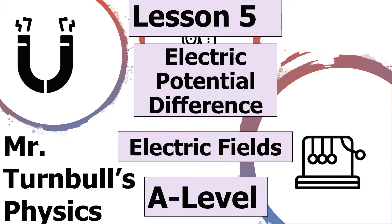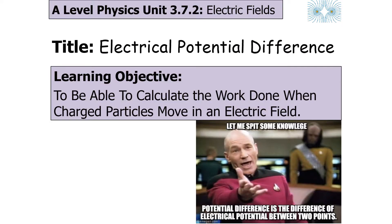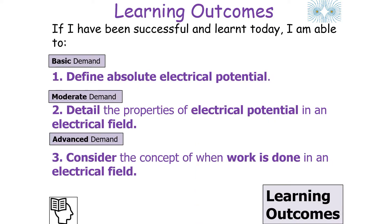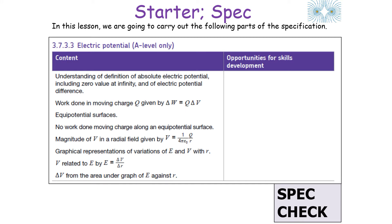Hello and welcome to today's lesson where we're going to look at electrical potential difference, which is part of the electrical fields topic for AQA A-level physics. In today's lesson we're going to try to calculate the work done when a charged particle moves in an electrical field. We should be able to define absolute electrical potential, detail its properties, and consider the concept of work done in an electrical field.